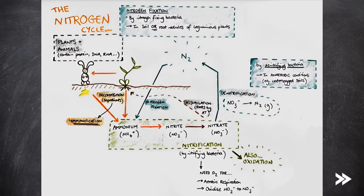The nitrate ions may also be converted to nitrogen gas in a process known as denitrification. This is done by denitrifying bacteria and occurs in anaerobic conditions, like waterlogged soils. The nitrogen gas goes into the atmosphere. Atmospheric nitrogen gas can be converted back into ammonium by nitrogen-fixing bacteria, which live in the soil or the root nodules of leguminous plants.